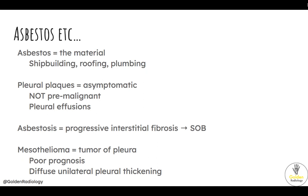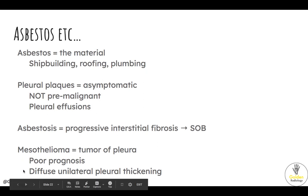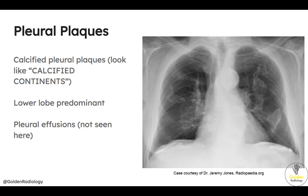Now let's review asbestos-related spectrum disease. Asbestos was used in shipbuilding, roofing, and plumbing historically. It can cause several clinical entities, some benign and some malignant. On the benign side, pleural plaques are completely asymptomatic and not pre-malignant. You can also have benign pleural effusions. Asbestosis, on the other hand, is a progressive interstitial fibrosis leading to progressive shortness of breath; in advanced cases on CT it can look like idiopathic pulmonary fibrosis with honeycombing and bronchiectasis. The radiology buzzword for pleural plaques is calcified continents — these well-demarcated lesions look like little Pangaeas, Europes, and Africas — and they tend to affect the lower lobes predominantly.